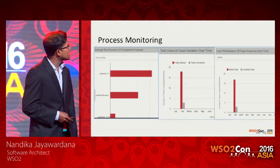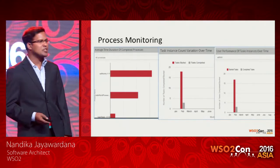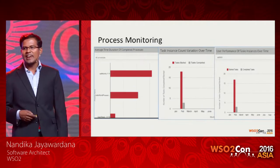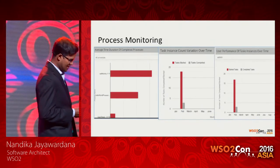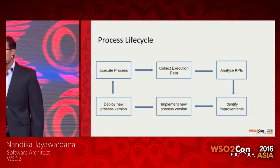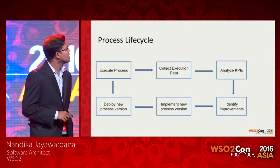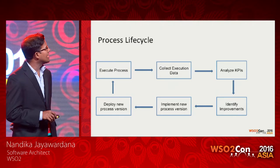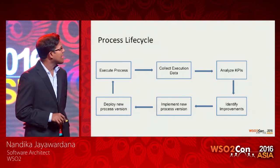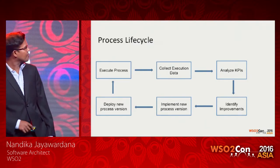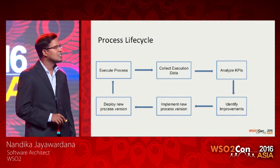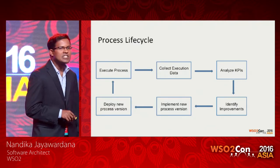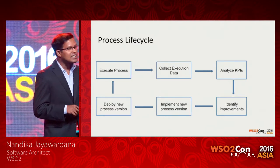The Business Process Server provides built-in monitoring graphs, and the Process Center offers additional advanced drill-down graphs for better business intelligence. Once the process is executing, it enters a continuous lifecycle of improvement: you collect execution data, analyze KPIs, identify improvements — either to the actual business process or to the people and work involved — implement a new version, deploy it, and continue the cycle.